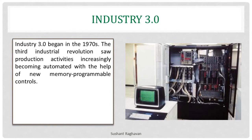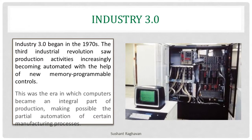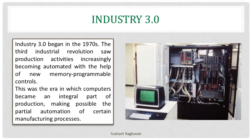Industry 3.0 began in the 1970s. The third industrial revolution saw production activities increasingly becoming automated with the help of new memory programmable controls. This was the era in which computers became an integral part of production, making possible the partial automation of certain manufacturing processes.